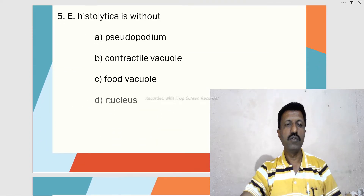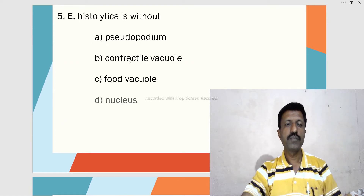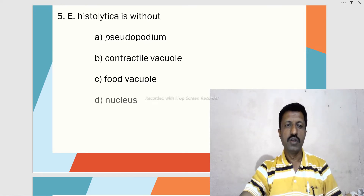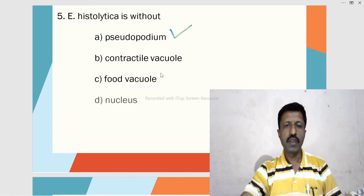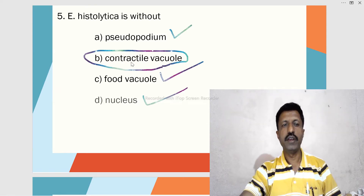Fifth MCQ: Entamoeba histolytica is without — A. Pseudopodium, B. Contractile vacuole, C. Food vacuole, D. Nucleus. Entamoeba histolytica has pseudopodia, food vacuoles, and a nucleus, but there is no contractile vacuole found in its body.